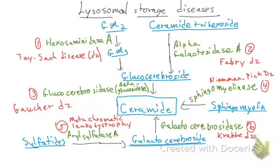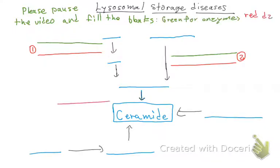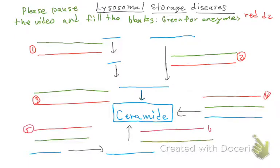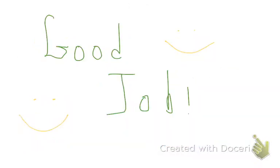Now here is the full diagram of lysosomal storage diseases. Please pause the video and fill in the blanks: green is for the enzyme, red is for the disease, and blue is for the substrate. After you're done, come back and review the answers.